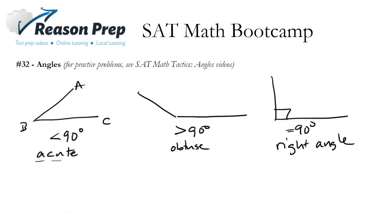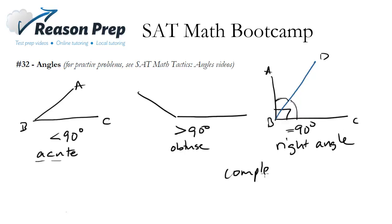One thing to remember about a right angle — let's say I draw a line right through here, creating points A, B, C, and D. This angle and this angle must add up to 90, because I've just split it in two. These two angles, ABD and DBC, are known as complementary angles. Complementary angles just means they add up to 90.